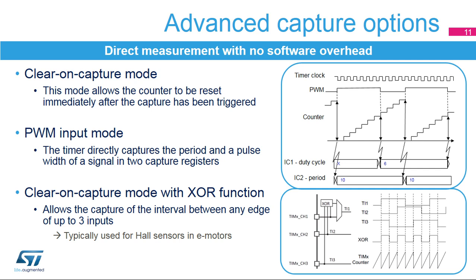This slide presents some of the more advanced capture-related functions. The clear-on-capture mode causes a counter reset immediately after the capture has been triggered. This allows a direct measurement of the period, while a traditional free-running counter would require additional computation. In PWM input mode, the timer is able to capture both the period and the duty cycle of an incoming PWM signal. The input signal is internally routed to two capture channels.